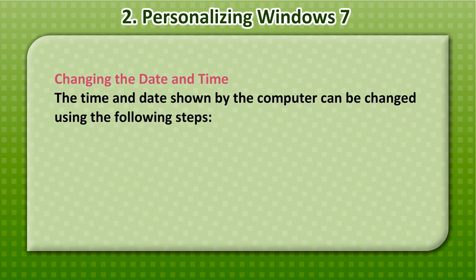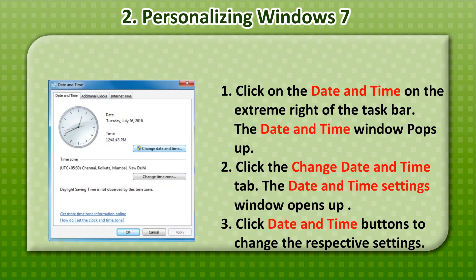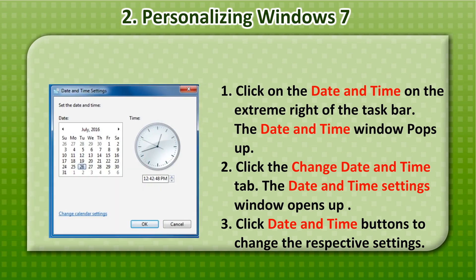Changing the Date and Time: The time and date shown by the computer can be changed using the following steps. 1. Click on the Date and Time on the extreme right of the taskbar; the Date and Time window pops up. 2. Click the Change Date and Time tab; the Date and Time Settings window opens up. 3. Click the Date and Time buttons to change the respective settings.